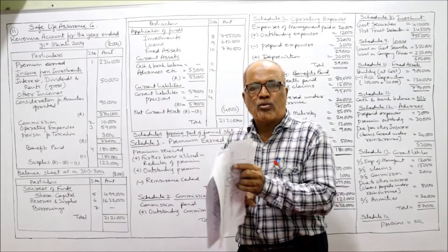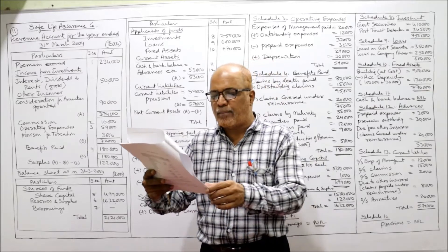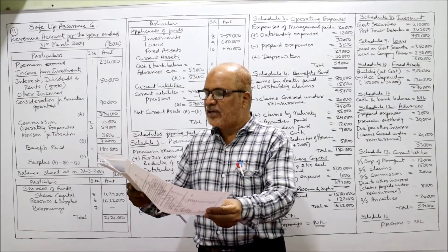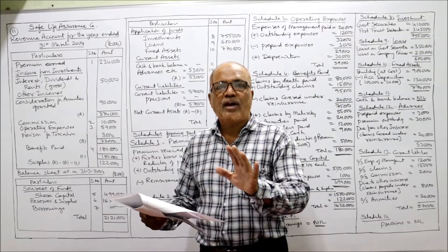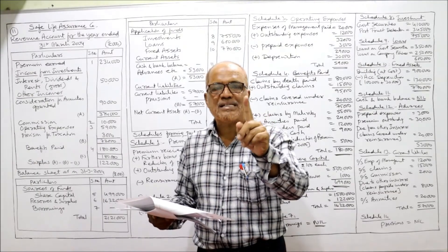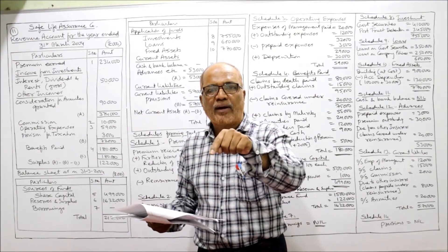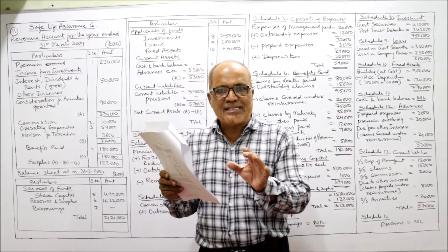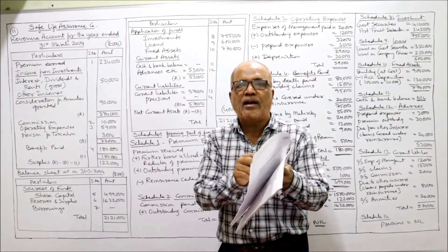Now I'm reading the 11th problem. The following trial balance was extracted from the books of Safe Life Assurance Company Limited. Prepare the revenue account for the year ended and balance sheet, after taking into account the following adjustments — all figures in thousands. Six adjustments are given. Trial balance items will appear only once, either in the revenue account or in the balance sheet, but adjustment items will have a double effect — once in the revenue account and again in the balance sheet. Keep a pencil or pen beside you and write the schedule number for each item.